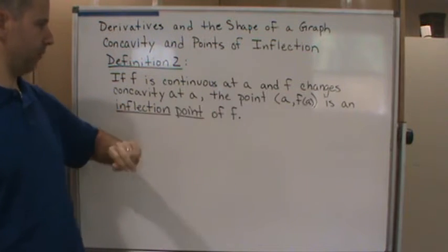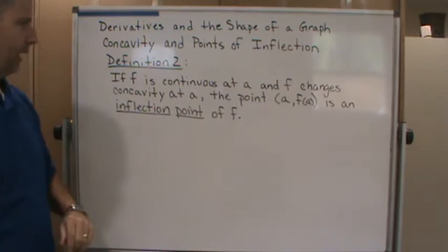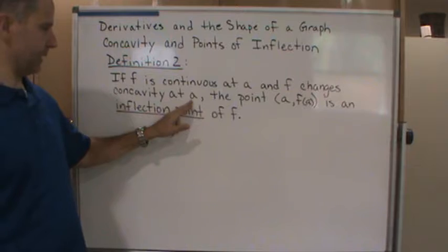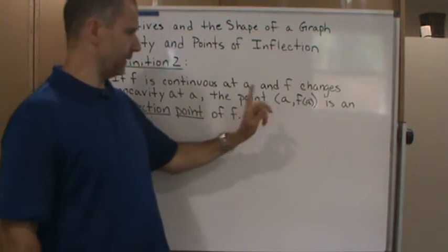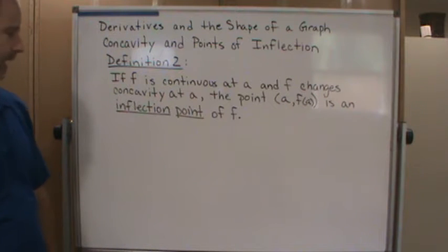Or I should say x equals a, not point a. If f is continuous at x equals a and f changes concavity at x equals a, the point (a, f(a)) is an inflection point of the function f.